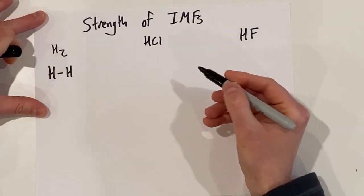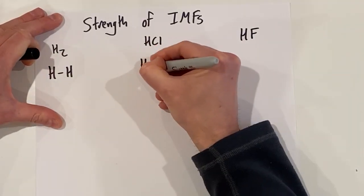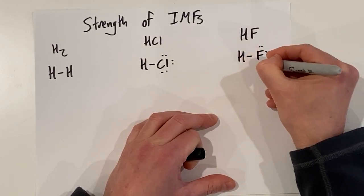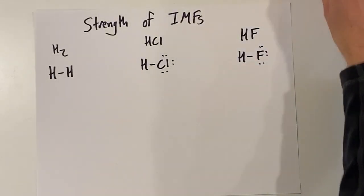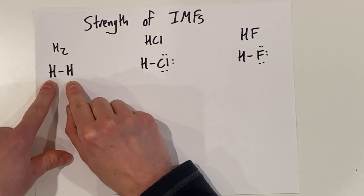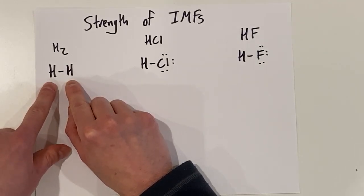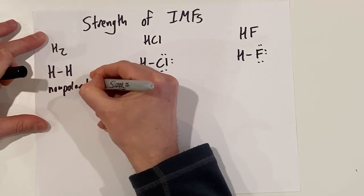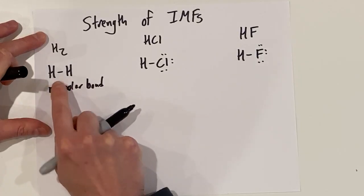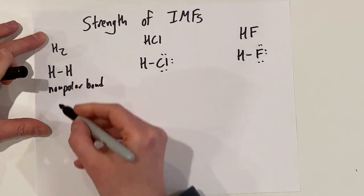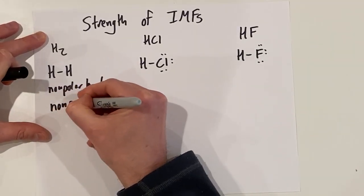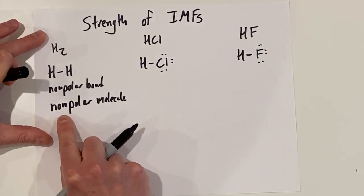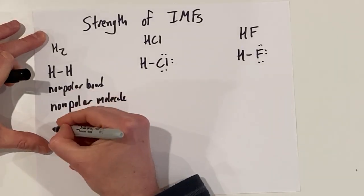H₂ is H–H with no lone pairs, because each hydrogen has one valence electron. If you look at H–H, these atoms are identical — both hydrogens — so we end up with a nonpolar bond. And if all the bonds in the molecule are nonpolar, then the molecule itself is nonpolar. Nonpolar molecules experience only London dispersion forces.